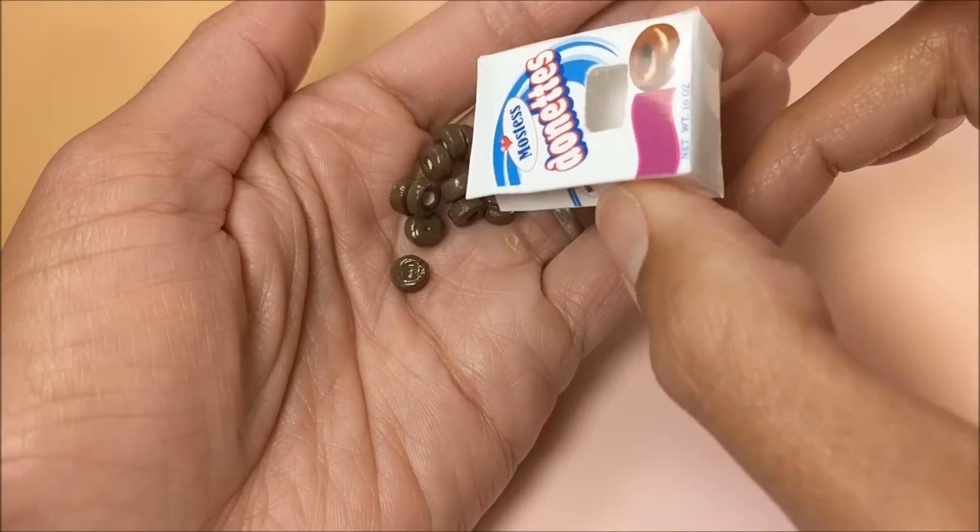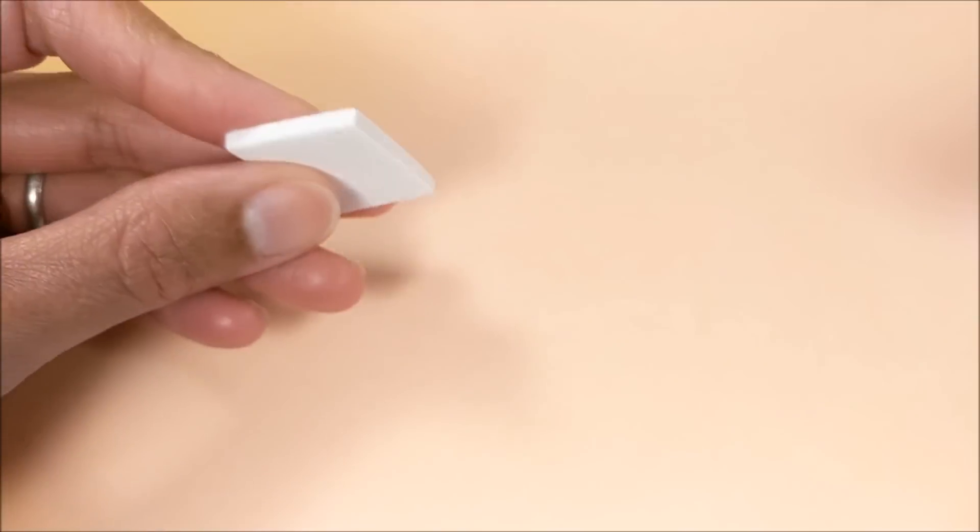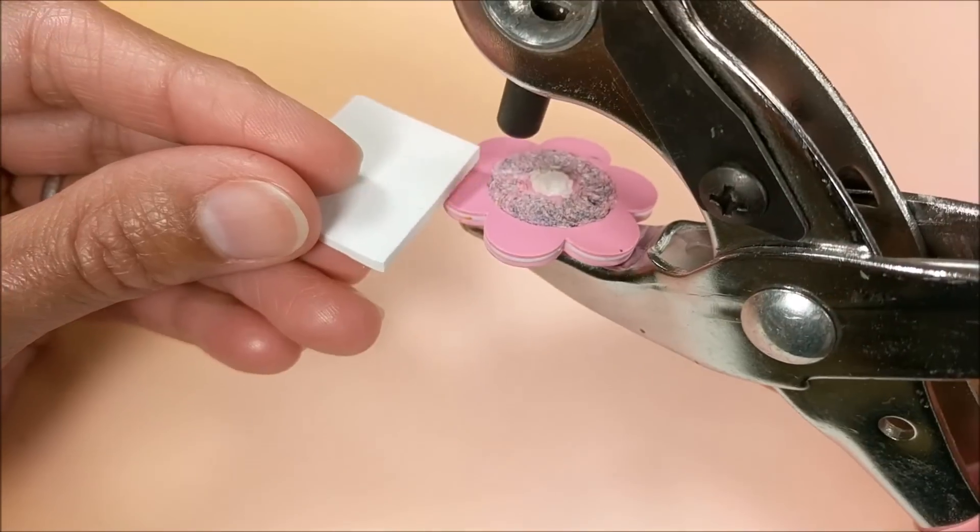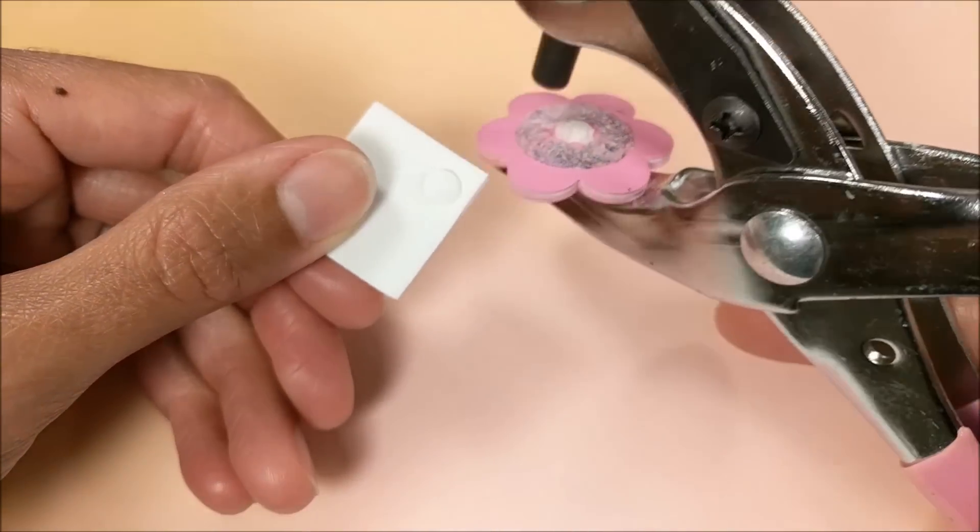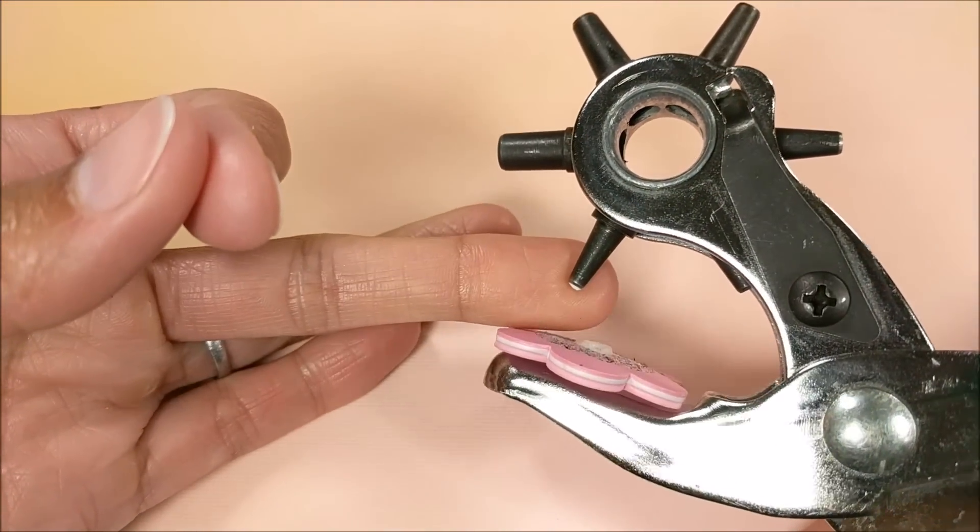Okay guys, so I start here with some thick craft foam. I use the largest setting on my multi-hole punch and then the smallest setting for the inner hole.